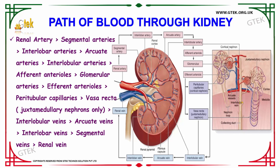Now we are going to see the blood path through the kidney. Blood enters through the renal artery into the kidney, then it flows through the segmental artery. After the blood flows through the segmental artery, it goes into the interlobar artery, then travels to the intralobar artery. It then reaches the arcuate artery.